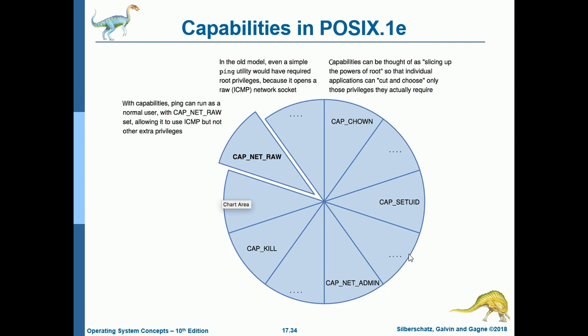An illustration of capabilities and POSIX.1e: in the old model, even a simple ping utility required root privileges because it opens a raw ICMP (Internet Control Message Protocol) network socket. With capabilities, root powers are sliced so individual applications can choose only those privileges they actually require. For the ping utility, it only needs cap_net_raw and does not need the other slices. With capabilities, ping can run as a normal user with only cap_net_raw set, allowing it to use ICMP but without extra privileges.